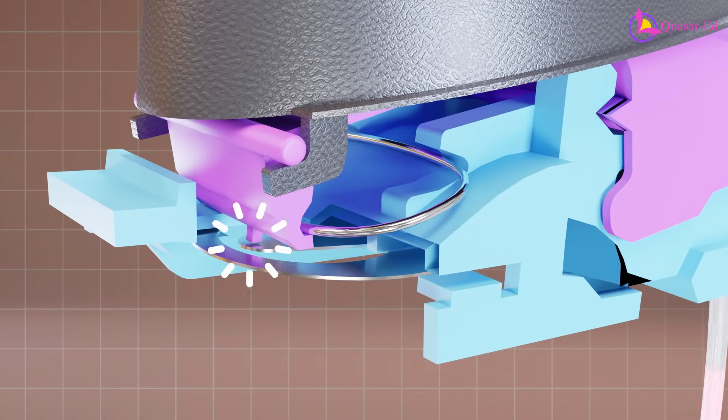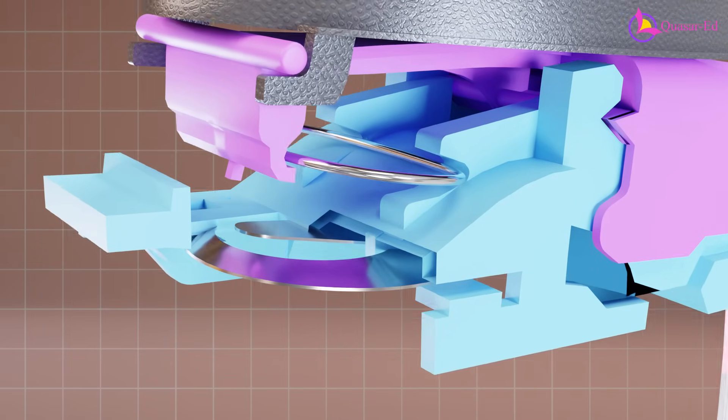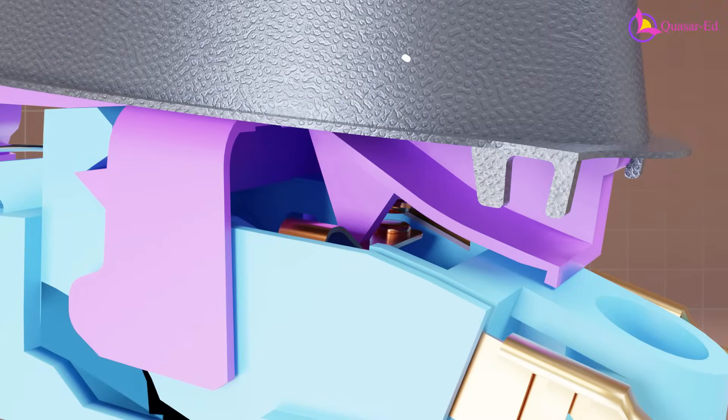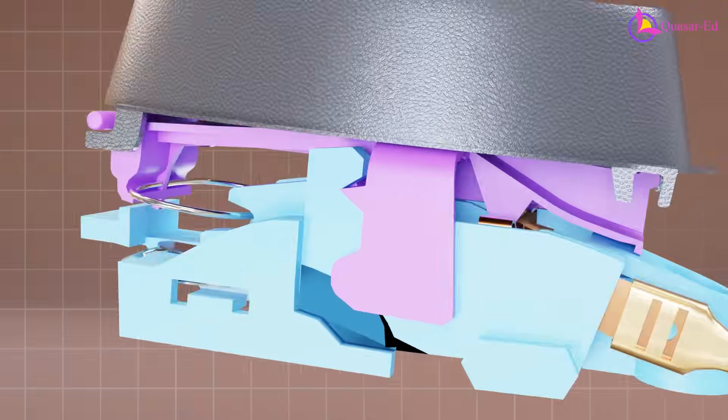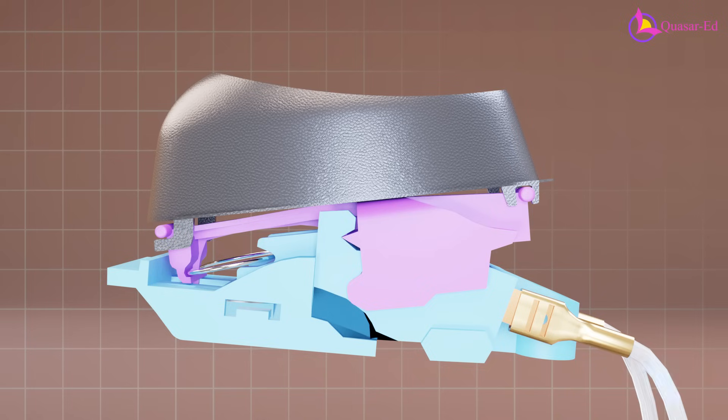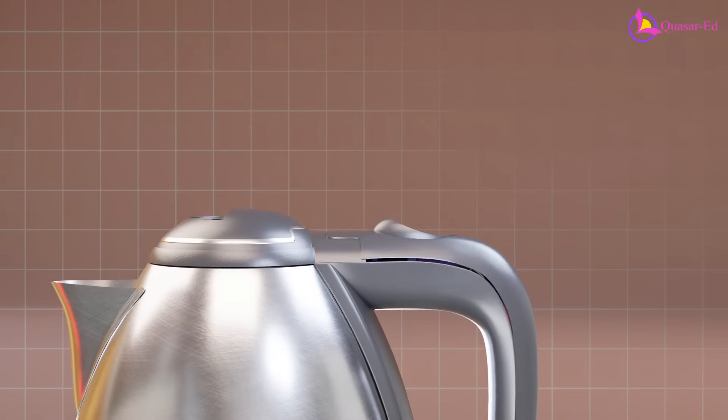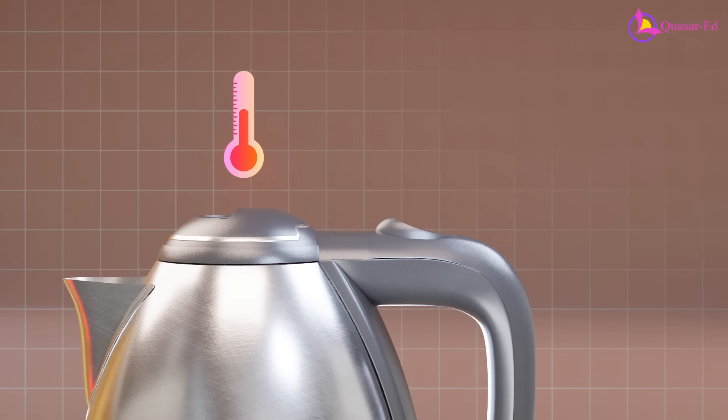When the tongue of the bimetallic disc rises, it pushes the switch beyond the critical point, triggering the switch to the off position. The switch is designed so that when it's on, the spring is close to its critical position, making it easy for the bimetallic disc to turn it off when the water reaches boiling point.